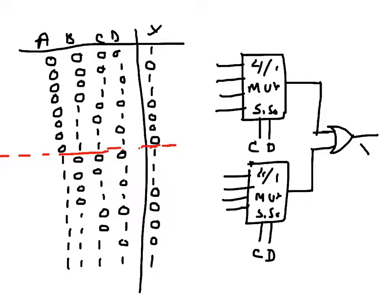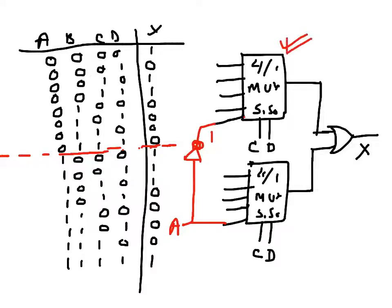Looking at this portion, multiplexers do have enables, and I am assuming the enable is active high. I will connect A to the enables — so this one means A is being inverted here. When A is zero, this first multiplexer will be enabled. This second one is connected directly so it gets zero here, meaning the second one is disabled when the first one is enabled.